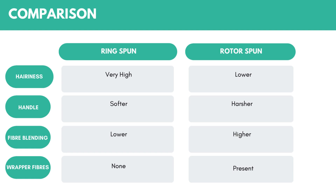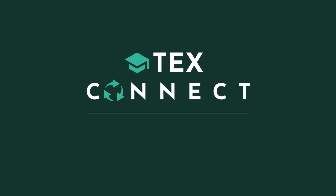Regarding handle, ring spun yarns are softer while rotor spun yarn is harsher. On fibre blending, fewer fibre types can be blended in ring spun yarn, whereas more fibres can be blended in rotor spun yarn. Wrapper fibres are not present at all in ring spun yarn, whereas they are the most essential part of an open end rotor spun yarn. That was all about ring spun and rotor spun yarn. We'll come back with another video on vortex yarn, so stay tuned and keep watching TexConnect, a learning center for textiles.